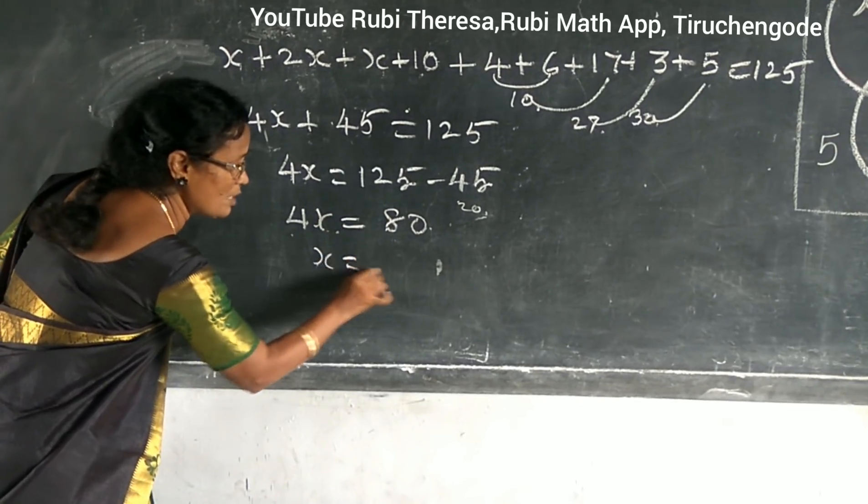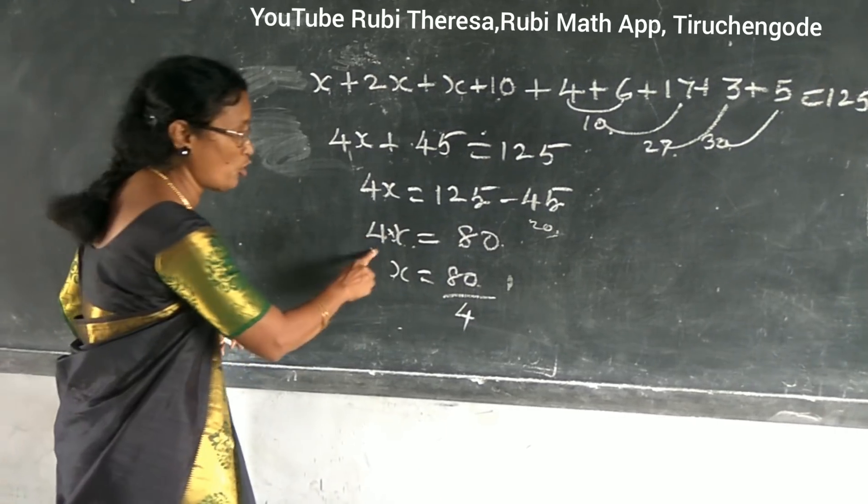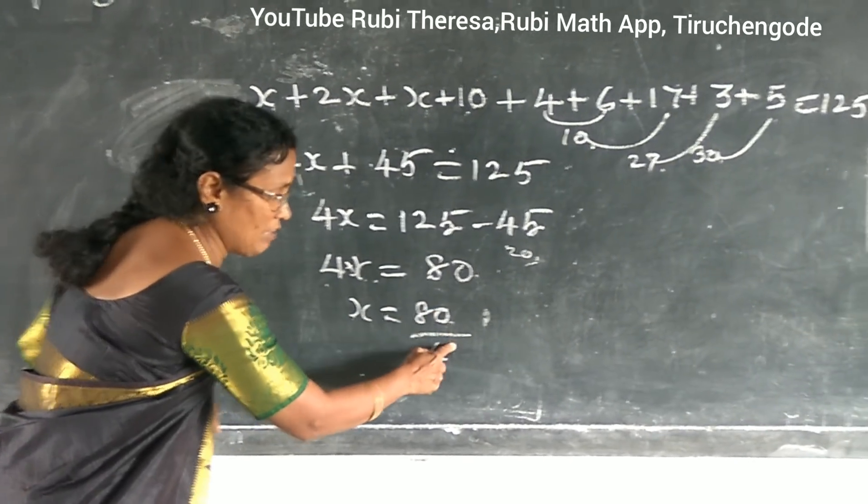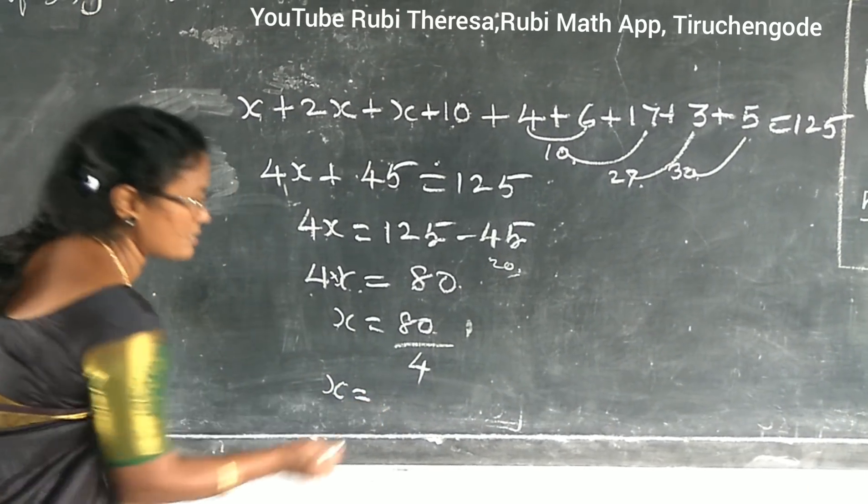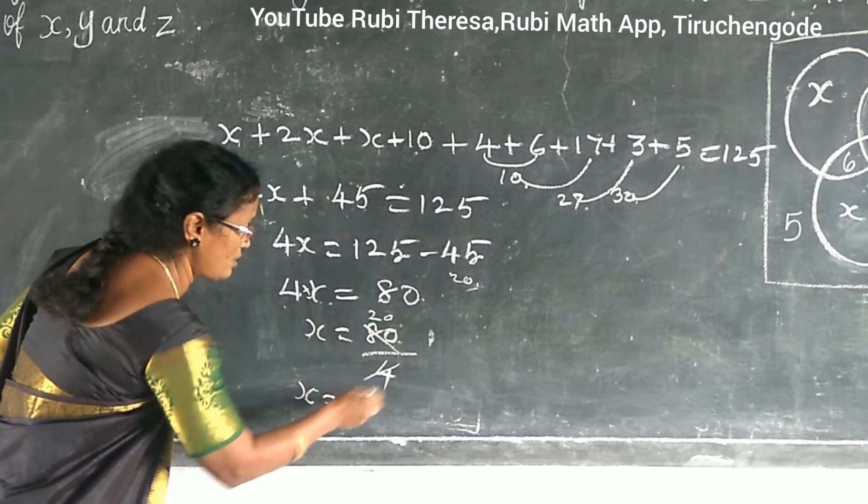So X equal to 80 divided by 4. Because this is into. 4X means 4 into X. So X equal to 80 divided by 4. So what is X? 20. 20 on 4 is 5.